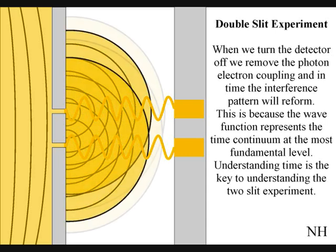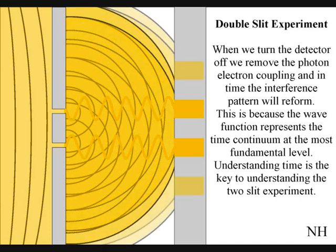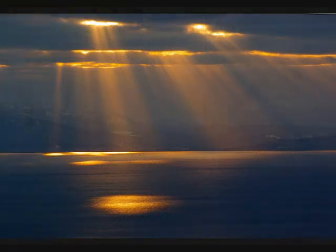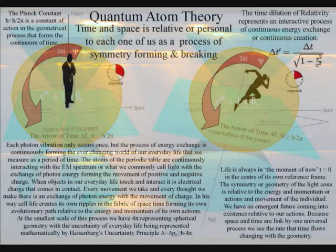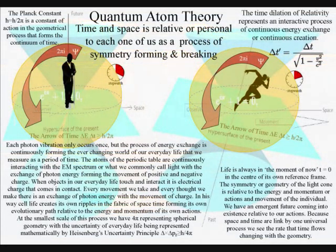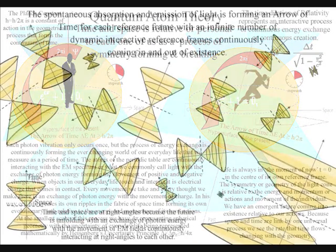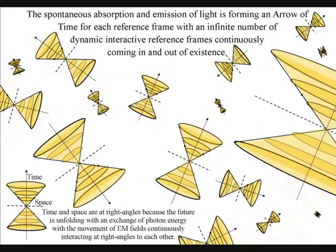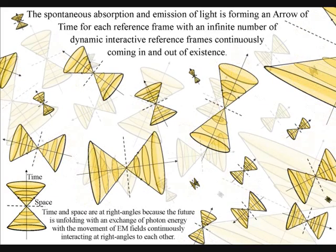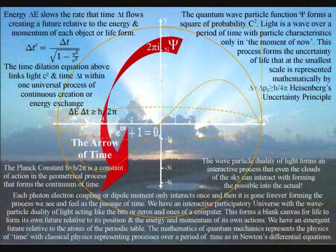We are always in the center of our own reference frame as part of this universal process of energy exchange, with the potential to interact with other reference frames, such as a two-slit experiment. Reference frames are continuously changing and coming in and out of existence, with photon energy continuously cascading down from the sun, forming greater degrees of freedom for entropy or disorganization, forming the passage or continuum of time.